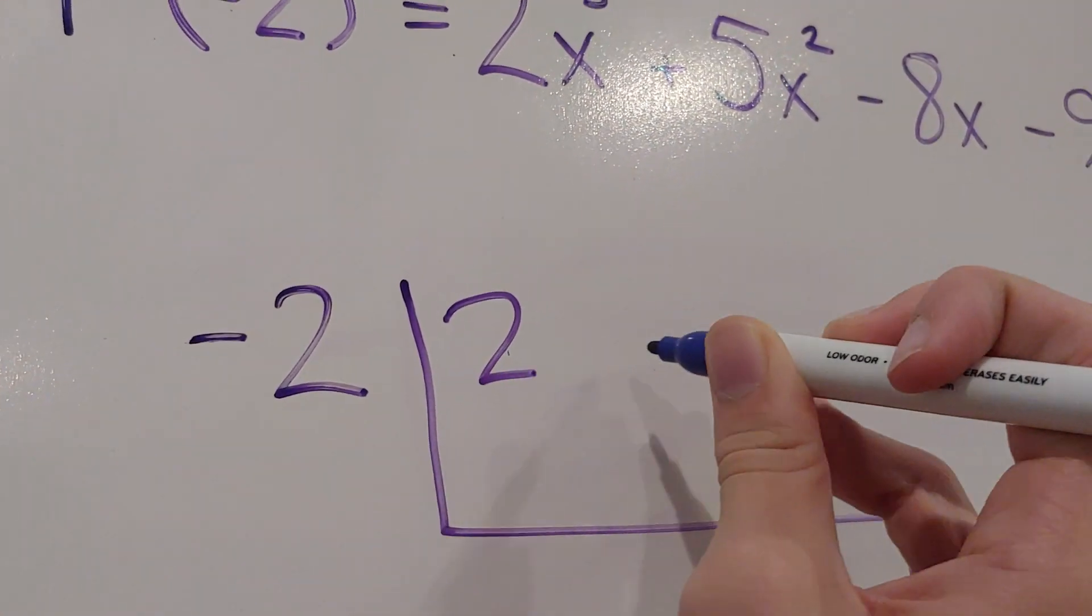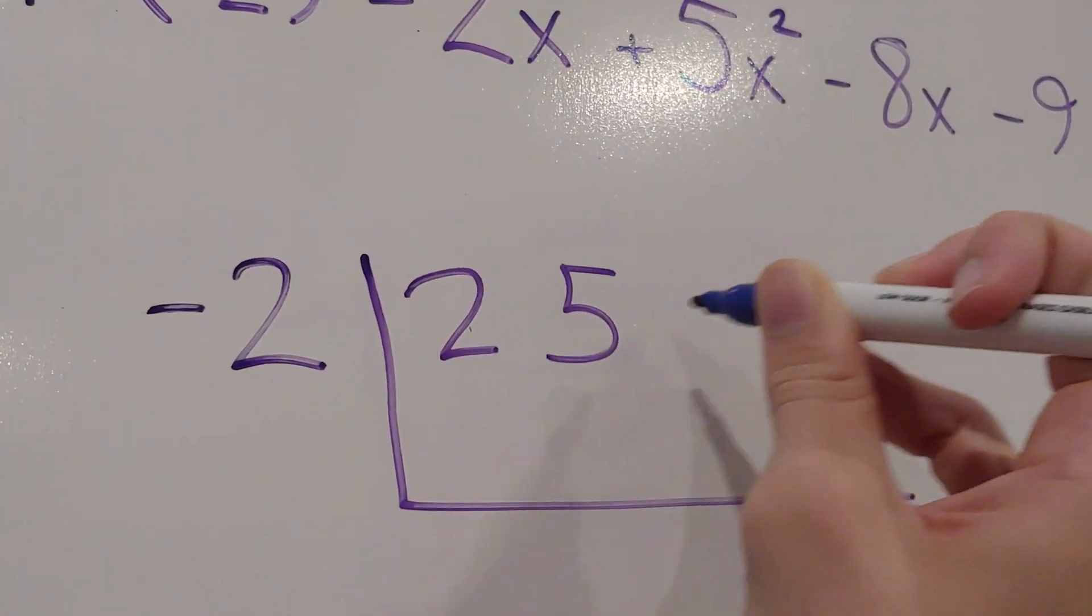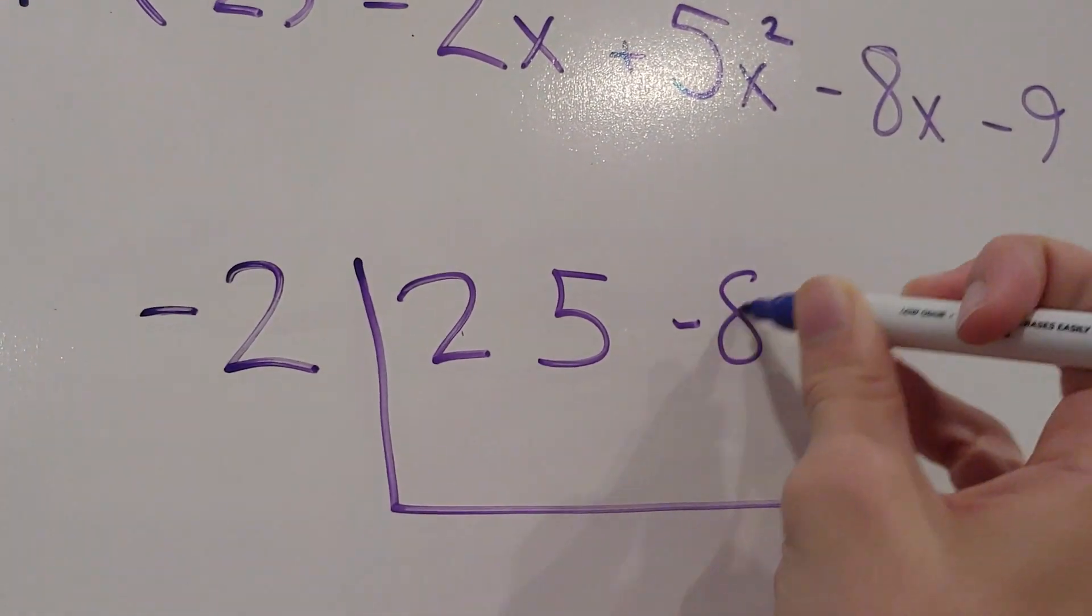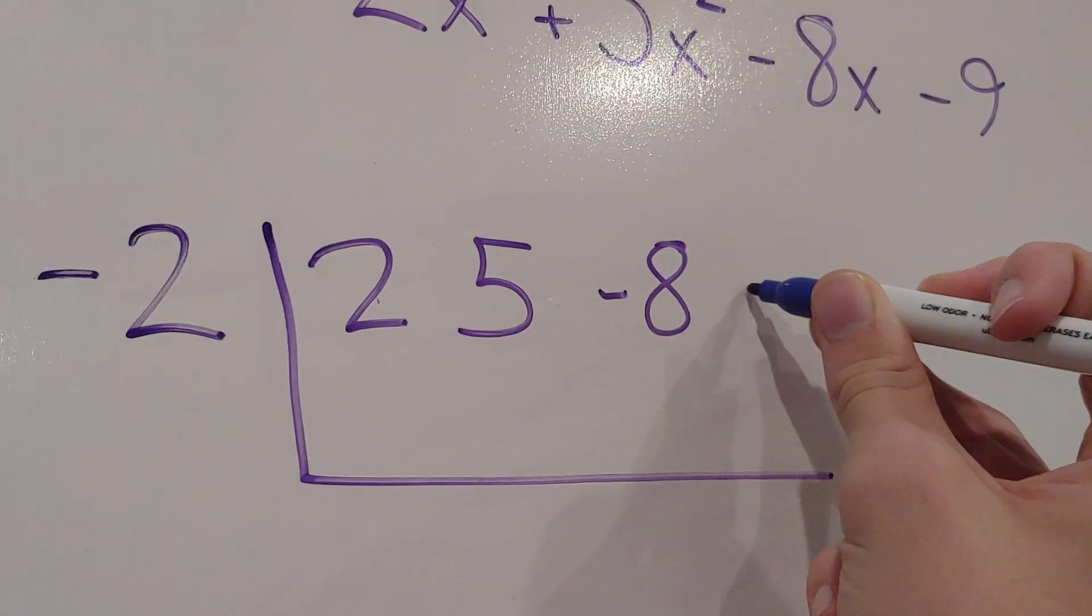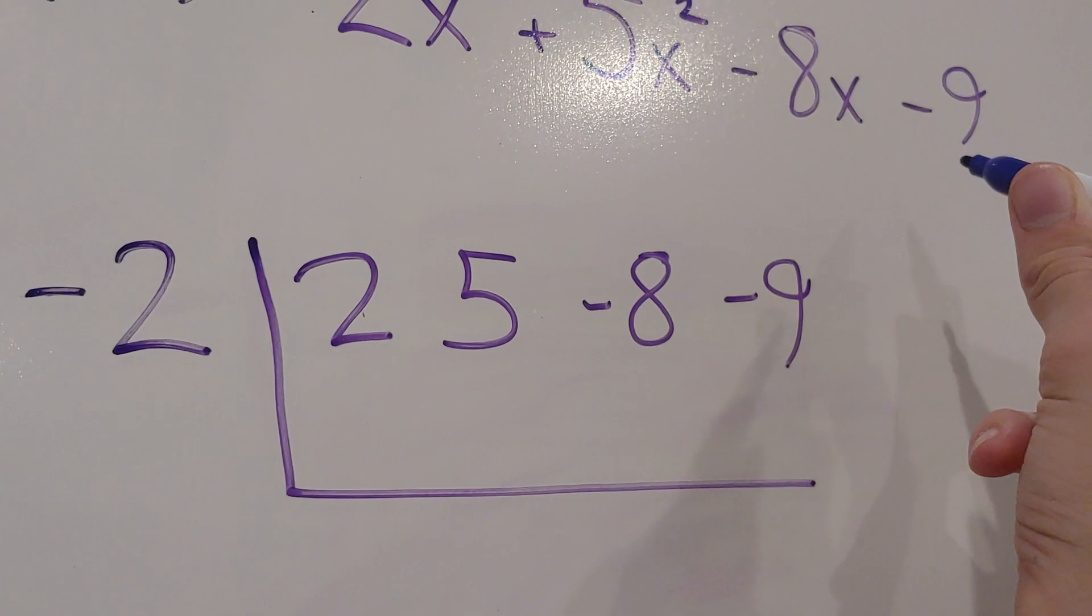2, positive 2, then positive 5, then negative 8 because there's a minus sign and negative 9 because there's a minus sign here.